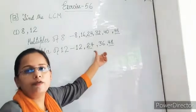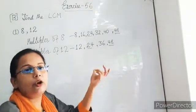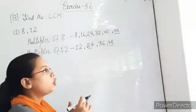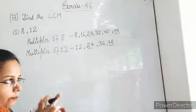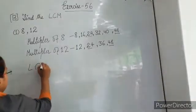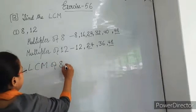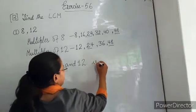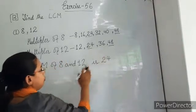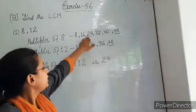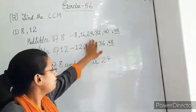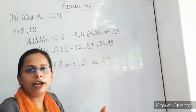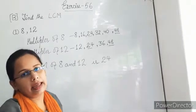Common multiples are 24 and 48. But which is the lowest? Lowest is 24. Means the first common multiple — the smallest number among the common multiples. So right here, LCM of 8 and 12 is 24. Why? Because 24 is the lowest common multiple. Among 24 and 48, 24 is the smaller number — that is the lowest number, so it will be the LCM.